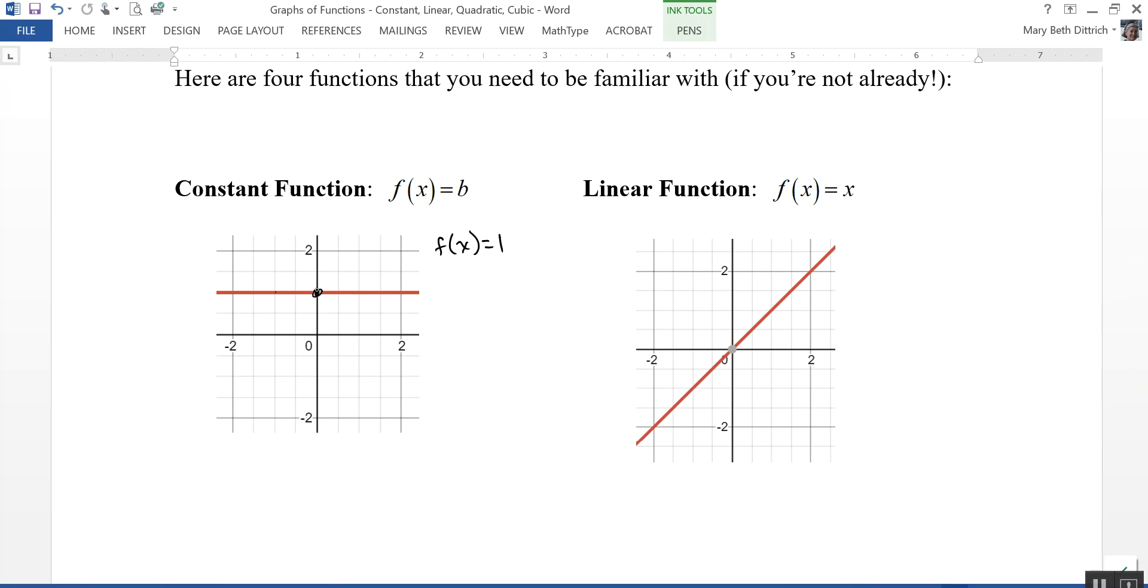Linear function you may be familiar with. That's f(x) equals x, and that's the graph of a line. This one, written as f(x) equals x, is also called the identity function, because whatever value you put in for x, you get the identical thing out for f(x) or y.